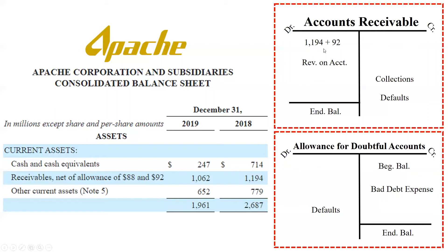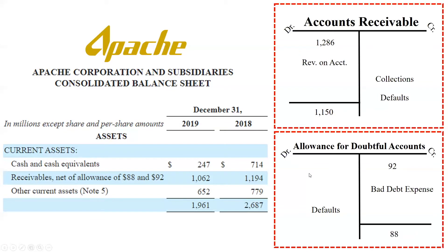1194 plus 92 gives a beginning gross accounts receivable of 1286. For the ending balance, 1062 plus 88 gives gross accounts receivable of 1150. We can also get the beginning and ending balances for the allowance for doubtful accounts directly from the balance sheet: 92 is the beginning balance and 88 is the ending balance.